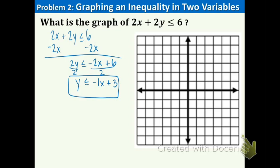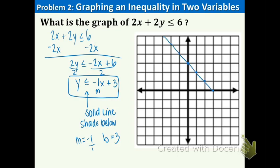That symbol has a line underneath, so we're going to have a solid line. It's a less than symbol, so we're going to shade below the line. The slope m = −1 over 1 and b = 3. Plot the y-intercept at 3, then go down 1 and right 1 repeatedly. Connect with a solid line because there is a line underneath the less than or equal to symbol. Lastly, we shade below because it is a less than symbol.